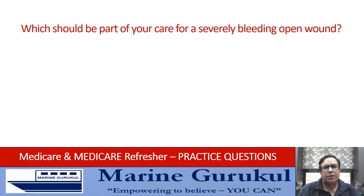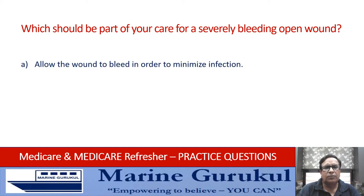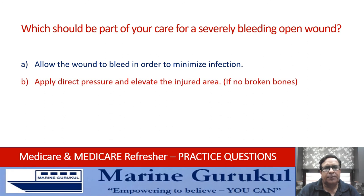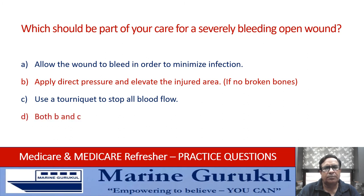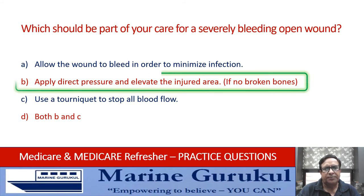Which should be part of your care for a severely bleeding open wound? Allow the wound to bleed to minimize infection; apply direct pressure and elevate the injured area if no broken bones; use a tonic kit to stop all blood flow; or both A and C? The answer is B — apply direct pressure and elevate the injured area to control bleeding, subject to there being no fractures.